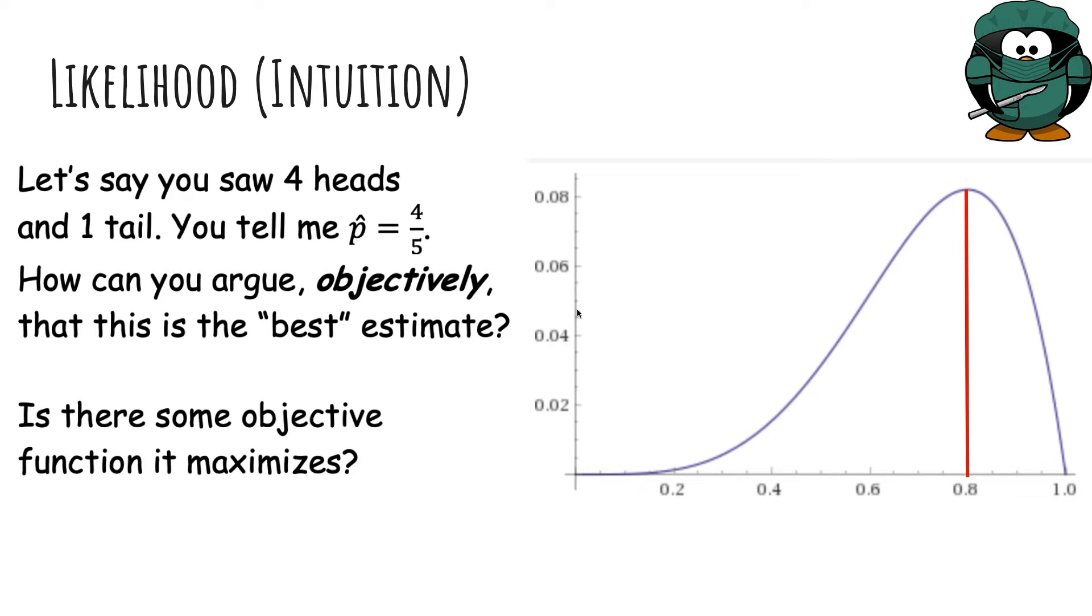And it turns out, yes. Actually, four fifths maximizes this blue curve, which is called the likelihood of the data.